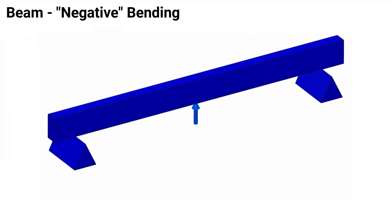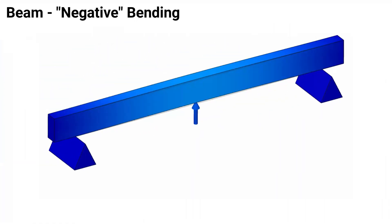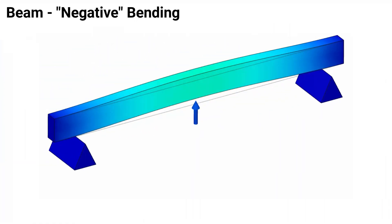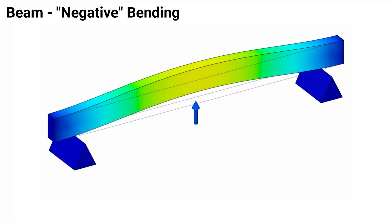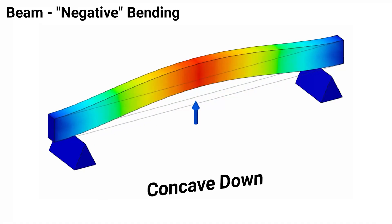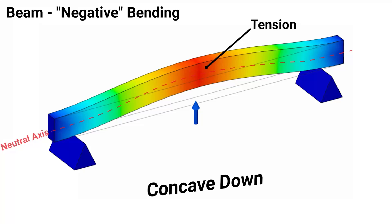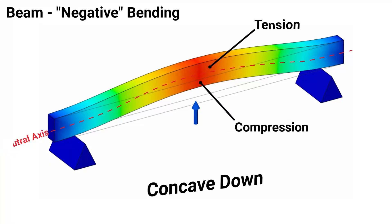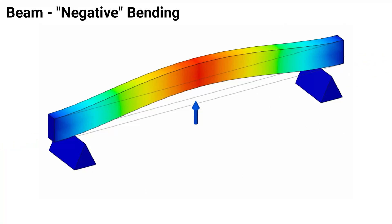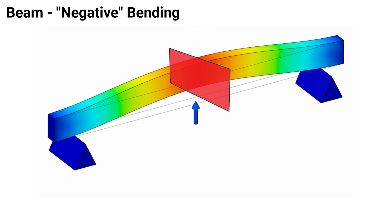Now, what if we have negative bending? The same exact logic will still apply with one exception. The deflected shape will be concave down, and with respect to the neutral axis, we will have tensile stresses developed above the neutral axis and compressive stresses developed below the neutral axis. Just as before, we can make a section cut directly through the middle where the maximum negative bending moment occurs.